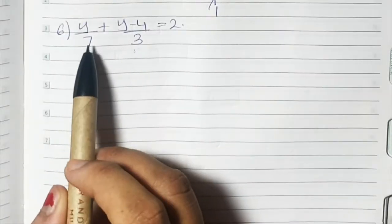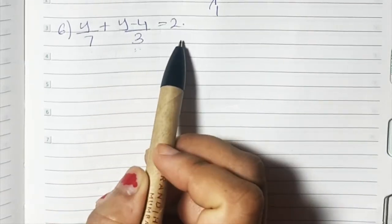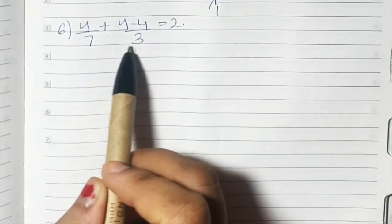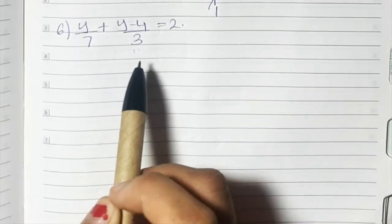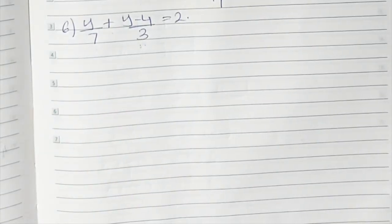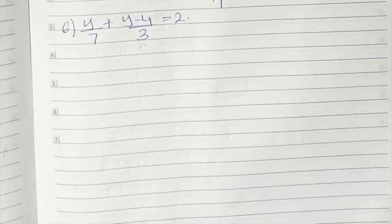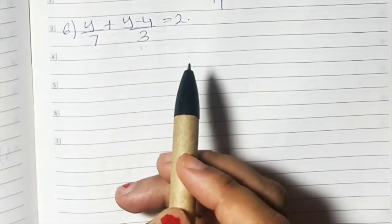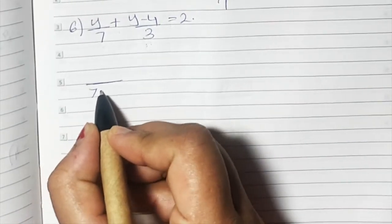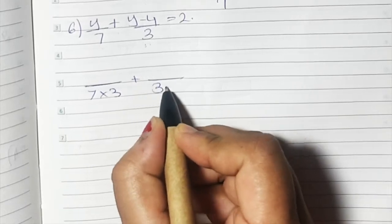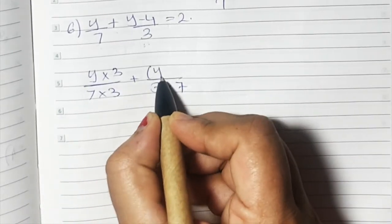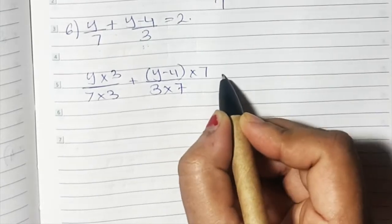Sum number 6: y upon 7 plus y minus 4 upon 3 is equal to 2. To add fractions, we need equal denominators. We take the LCM of 7 and 3, which is 21. So we write 7 into 3 plus 3 into 7 as the denominator, and multiply: y by 3 and y minus 4 by 7 on the numerator.